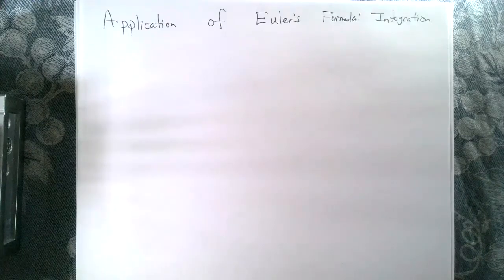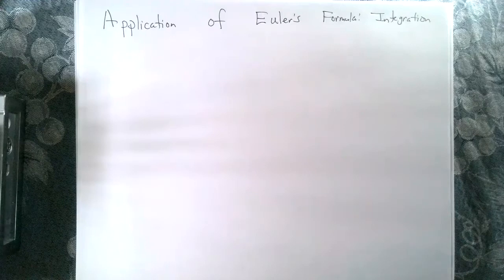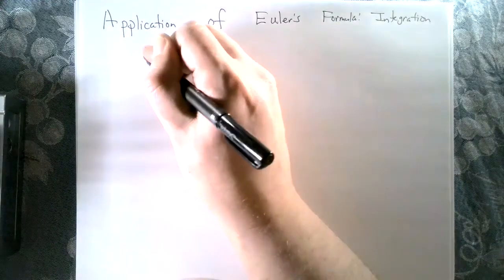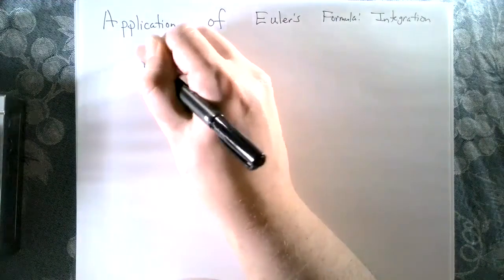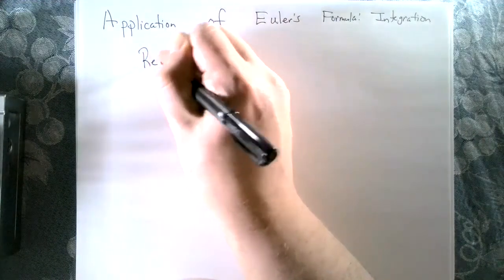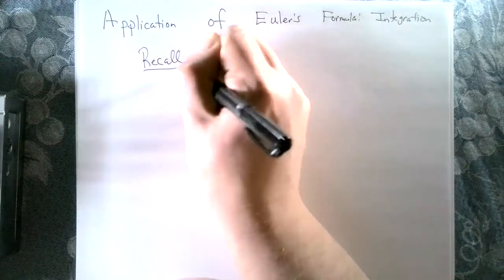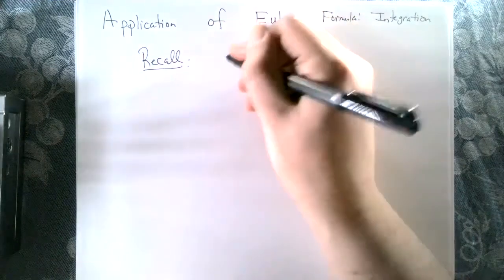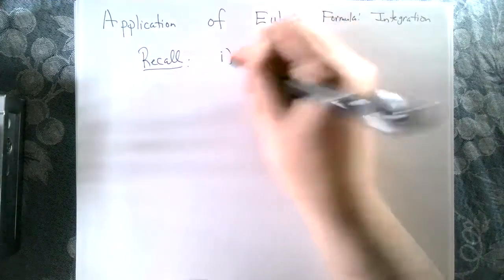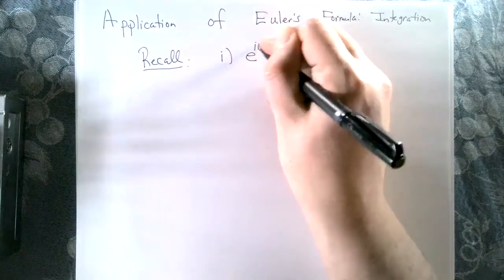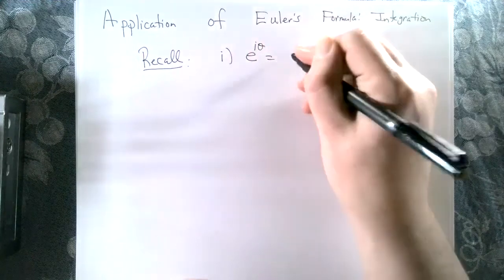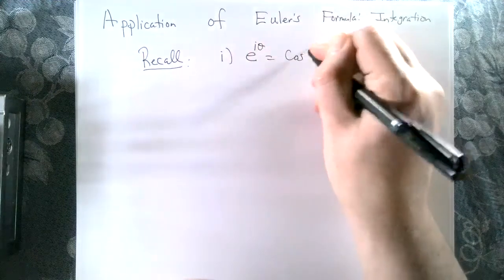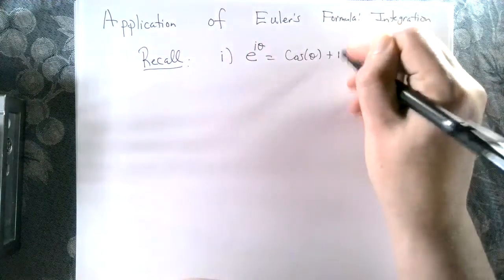Welcome back everybody. Let's look at an application of Euler's formula using integration. Let's recall Euler's formula: e to the i theta equals cosine of theta plus i sine of theta.